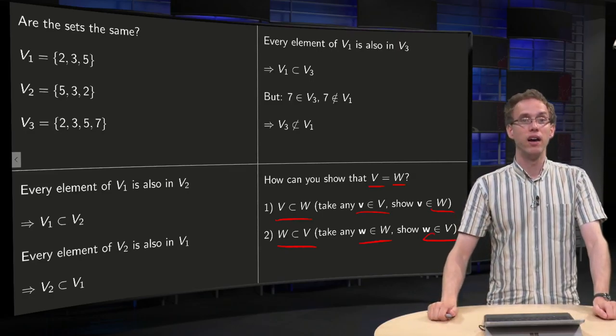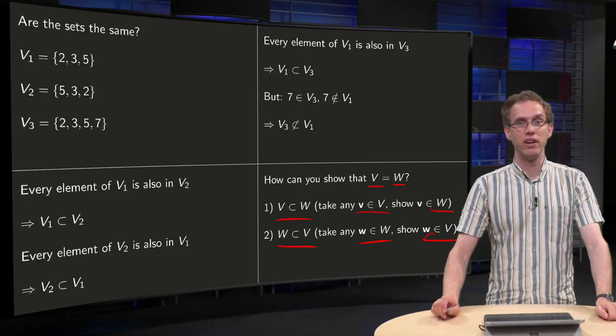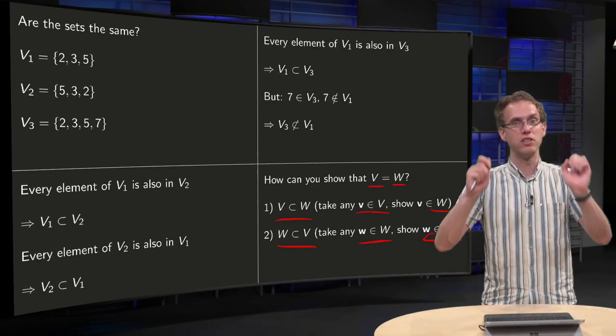And then you have shown that V and W are the same set. So this is the general idea of how you show that two sets are the same.